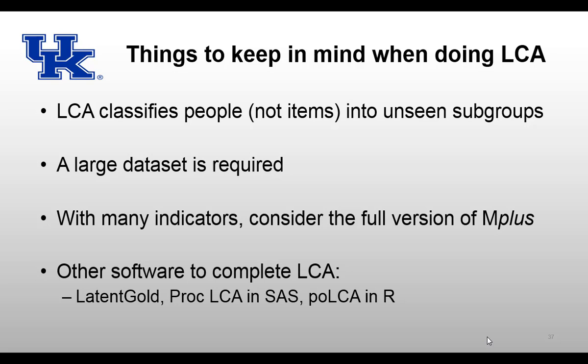The third tip — things to keep in mind when doing LCA: first, LCA classifies people, not items, into unseen subgroups. Second, a large dataset is required — preferably about 1,000 observations. With only 100 people, classifying them into unseen subgroups introduces a lot of error. Third, with many indicators, consider the full version of M+, as the demo has many restraints. The full version costs almost $1,000, but computers in ITC 151 have it installed and it's freely accessible to students and faculty. There are also other software options for LCA: Latent Gold, Proc LCA in SAS, and Proc LCA in R.